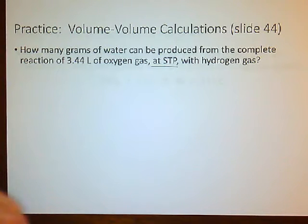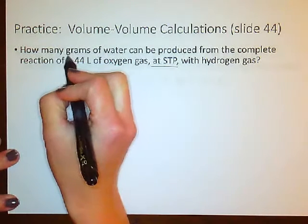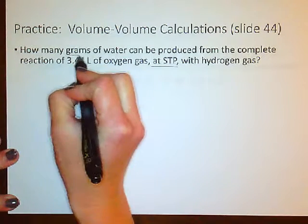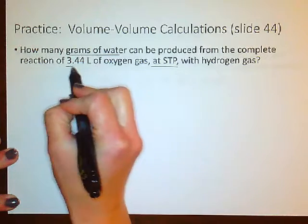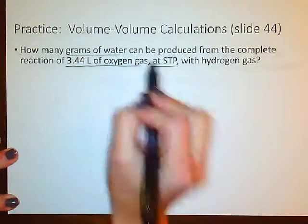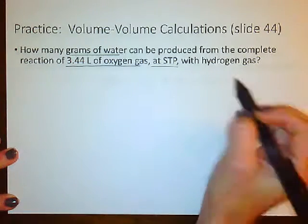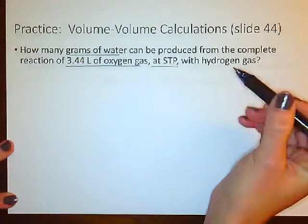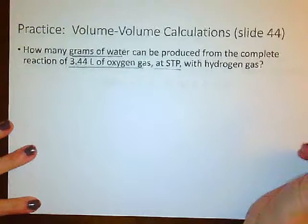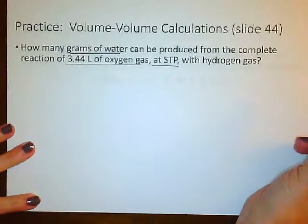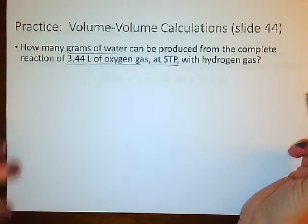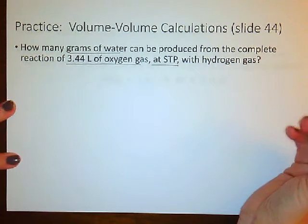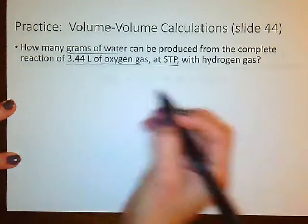Here is a problem where once again it's asking us for grams of water. It says we're starting with 3.44 liters of oxygen gas, but it doesn't give us the balanced chemical reaction. On the EOC or your final, you'll typically be given that reaction, but let's push our brains just a little bit.